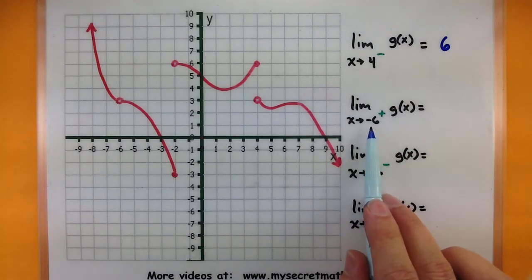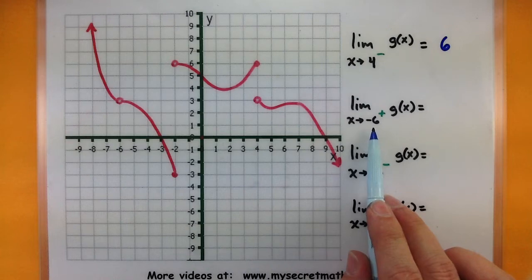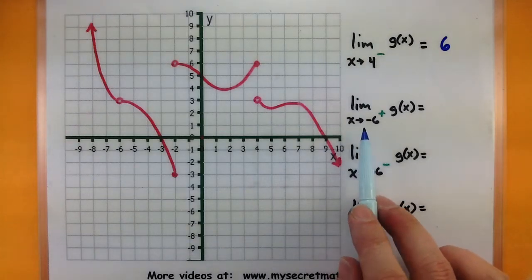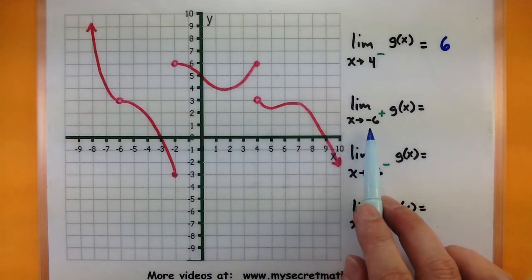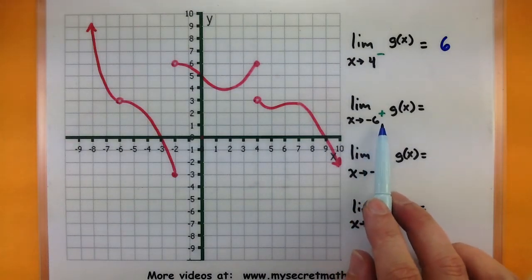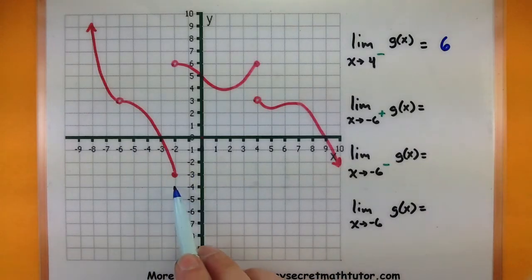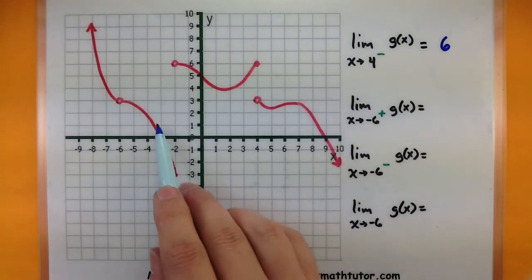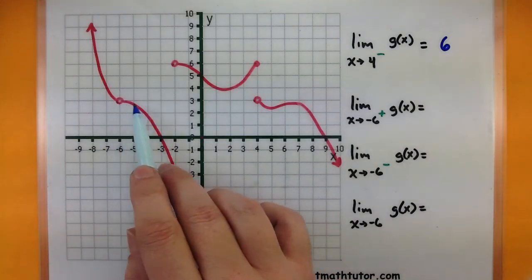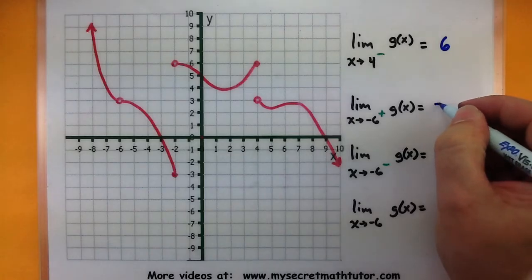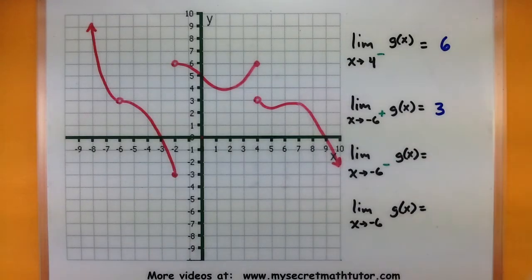This one says: find the value of the limit of g(x) as x approaches negative 6 from the right. Here's my negative 6 — we'll be approaching it from the right side. Look at the y value: this is getting close to 3.